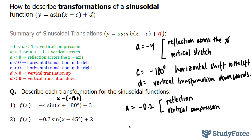Next we have our c value. Let's find out what it is. The c value is positive 45. You're probably confused because it looks like negative 45 — but remember, this has to model the template. So this would be x minus positive 45. This expression and this expression mean the exact same thing, so your c value is positive 45.